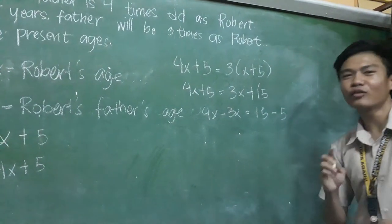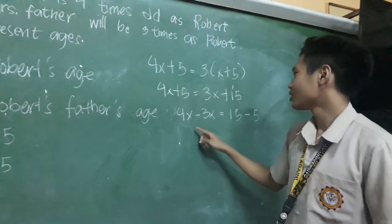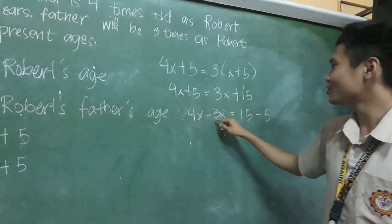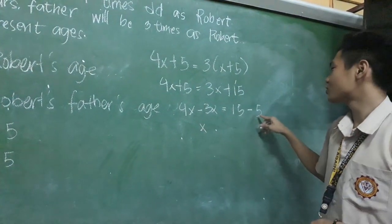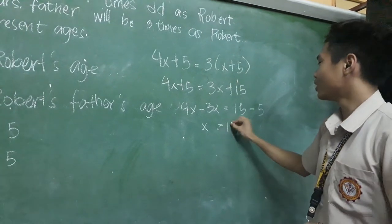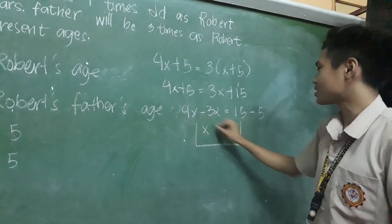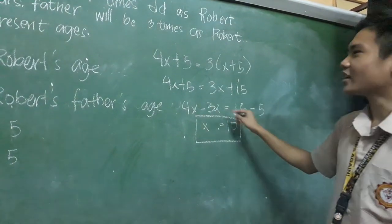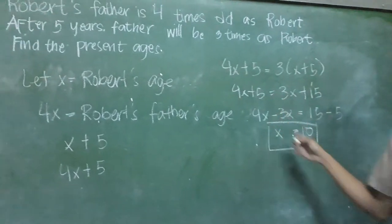Now we need to combine like terms. 4X minus 3X is X, and 15 minus 5 is 10. So now we have the value of X, and X is the age of Robert.